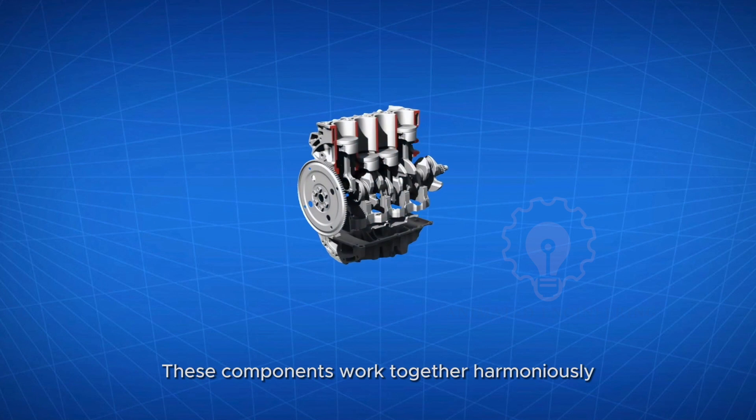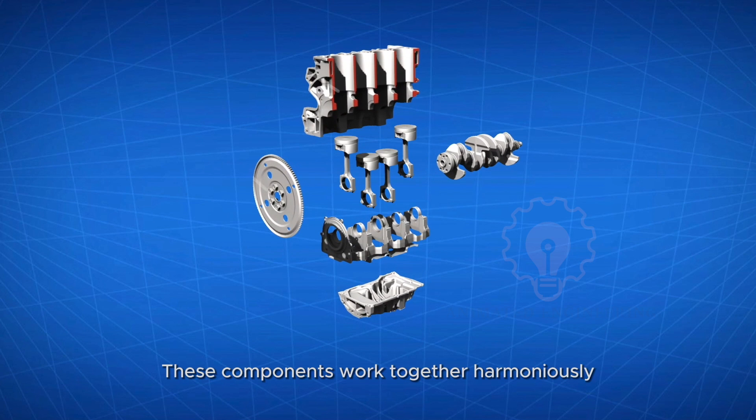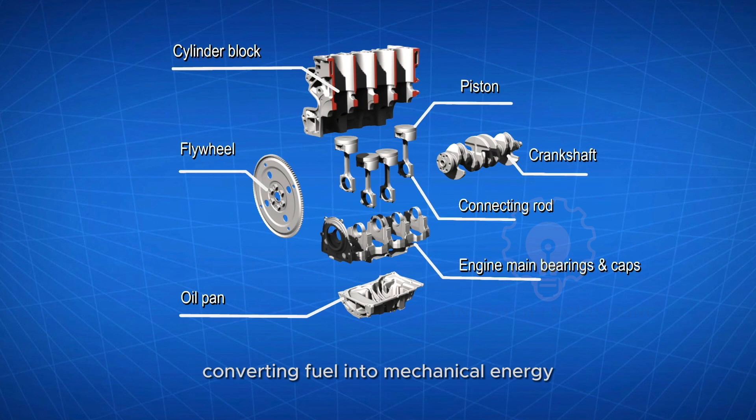These components work together harmoniously. The piston moves up and down, converting fuel into mechanical energy. The crankshaft then translates this linear motion into rotational motion. Now, let's move to the final part, the timing and drive belt systems.